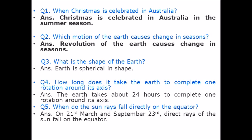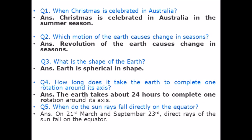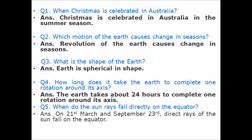Question number 3: What is the shape of the Earth? Answer: Earth is spherical in shape. Question number 4: How long does it take the Earth to complete one rotation on its axis? Answer: The Earth takes about 24 hours to complete one rotation around its axis.